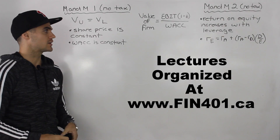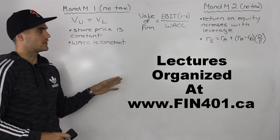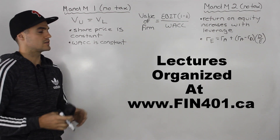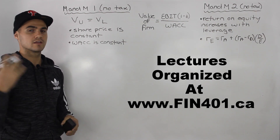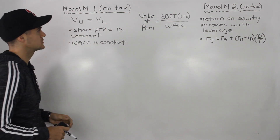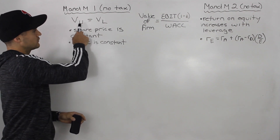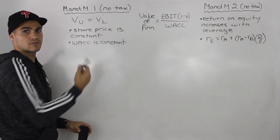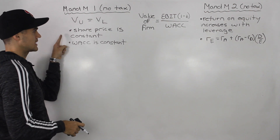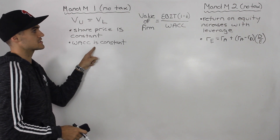What's up everybody, welcome back, Patrick here. In this video we're going to summarize together the two concepts we went over in the previous video. We went over M&M Proposition 1 with the no tax case and concluded that the value of an unlevered firm equals the value of a levered firm. Some implications of that were that the share price is constant and also the weighted average cost of capital is constant.